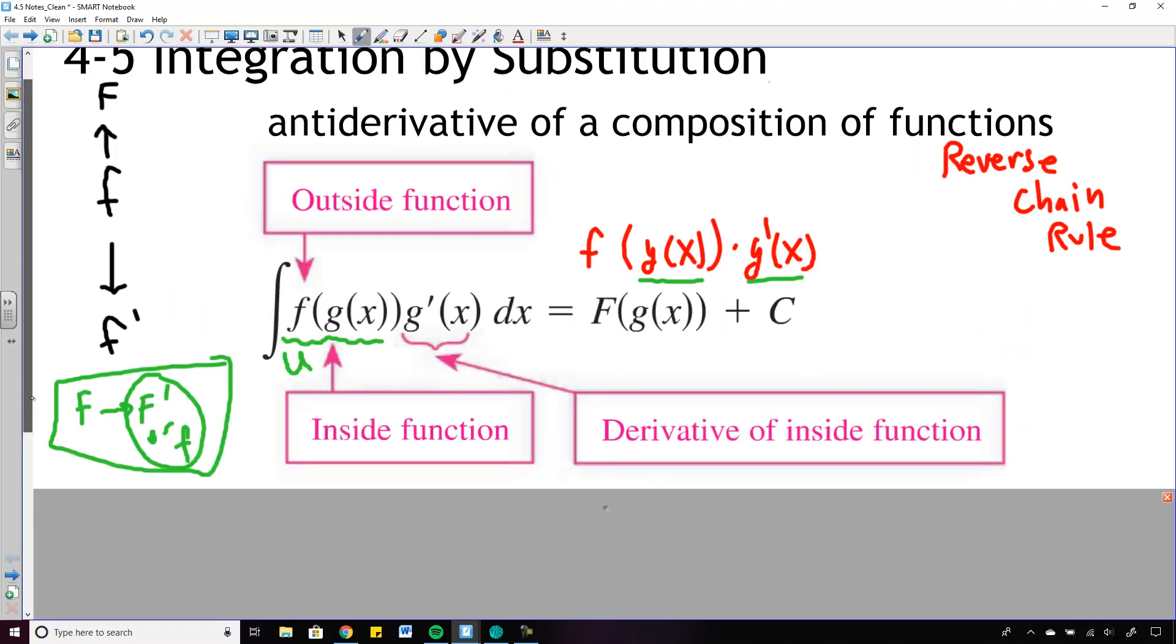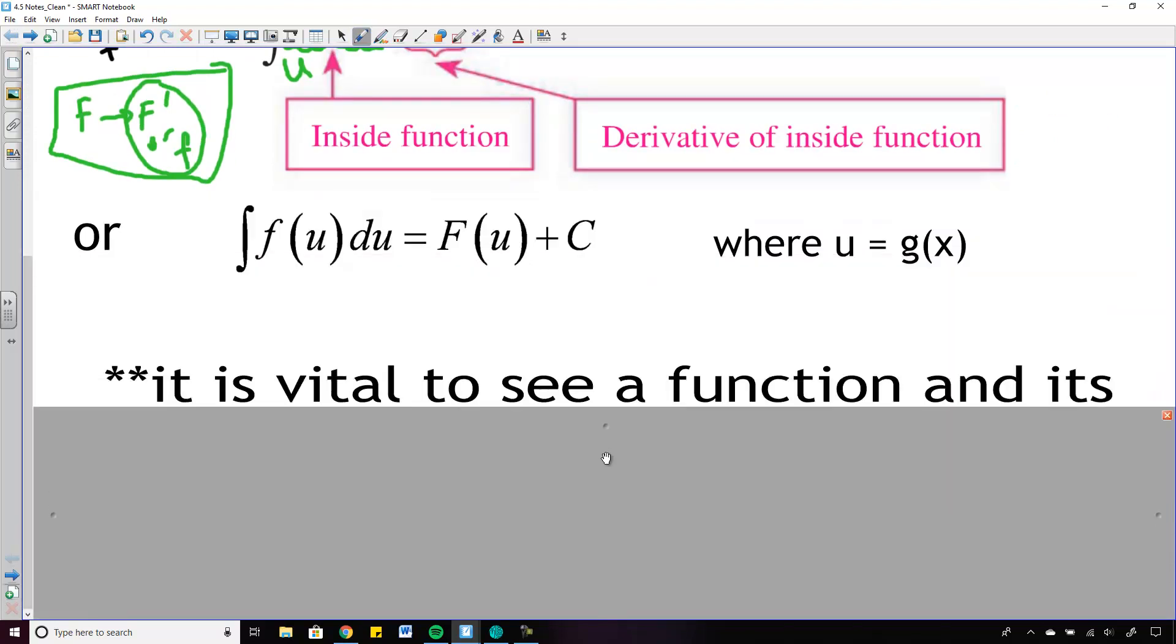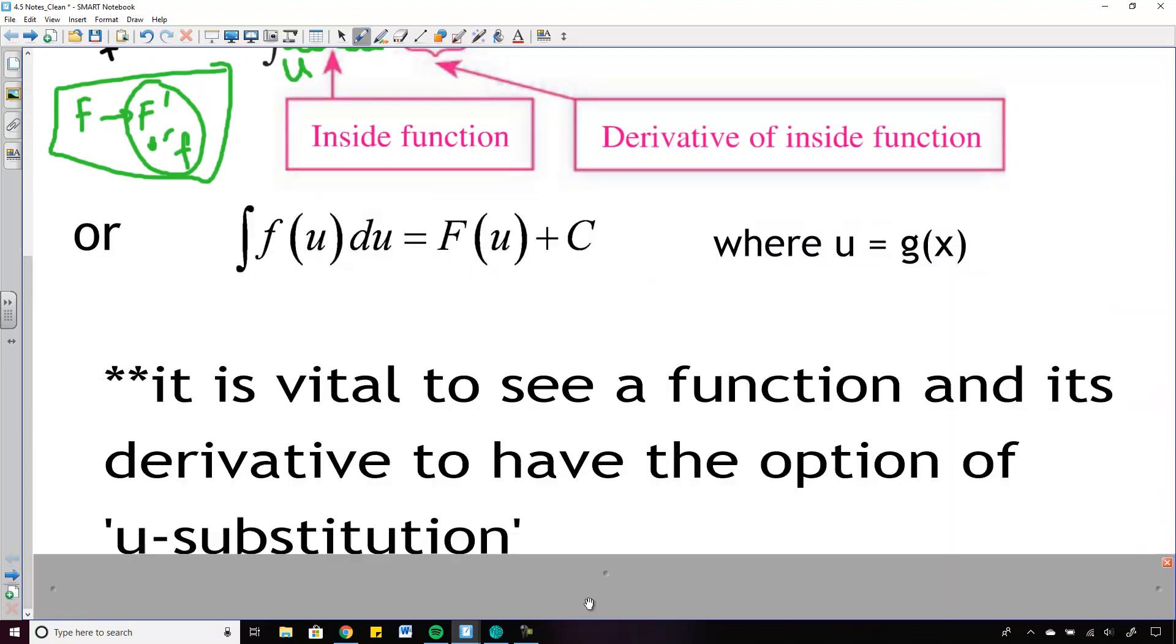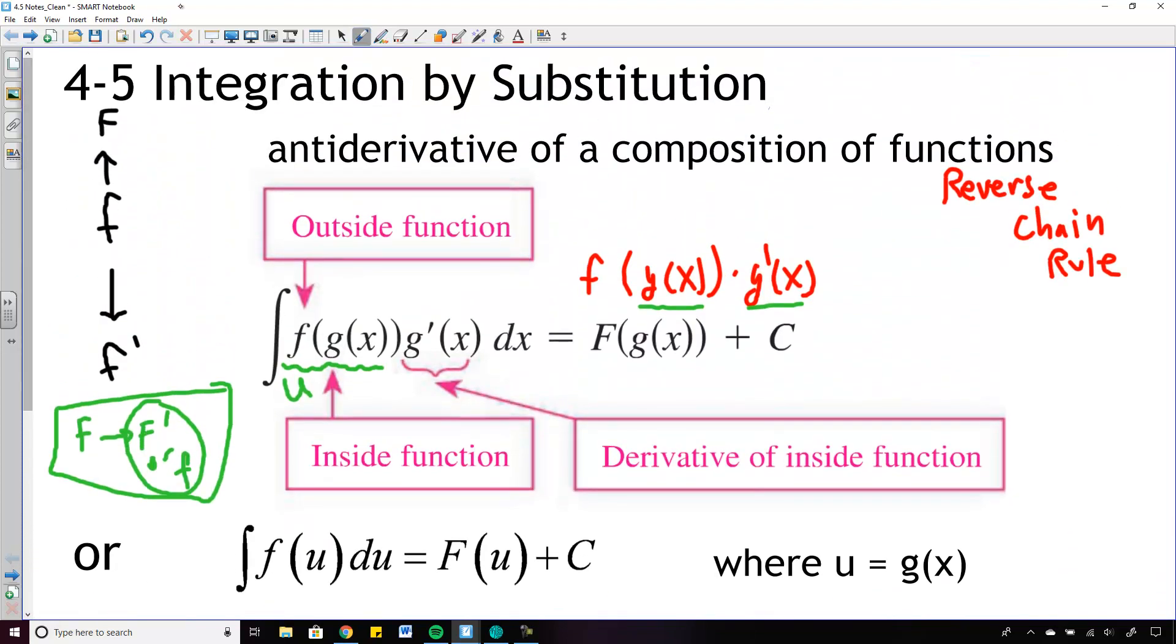So what am I talking about? It looks really stressful in this notation, and maybe even more stressful here, but what the idea is, it's vital to see a function and its derivative. So I'm going to underline, or you can underline, a function and its derivative. That's pretty important to have the option of u-substitution—we just call it u-substitution, so I put quotes. It could be t-substitution, anything like that. Okay, so this video will kind of cover that. We'll just call it 4.5, and maybe we'll give it a letter later.